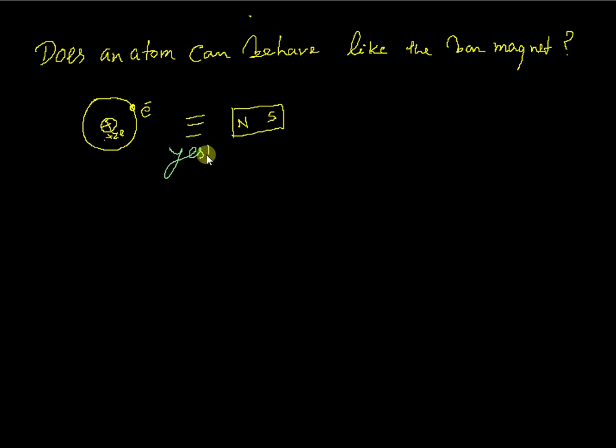Yes, it is possible. One atom which has one unpaired electron in outermost orbit can be equivalent to the bar magnet. How is it possible?